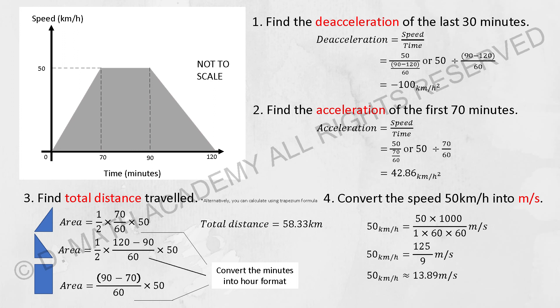To find the distance traveled, simply calculate the area. You have two options: either convert it into three shapes involving two triangles and one rectangle, or you can run the trapezium formula and calculate the answer.